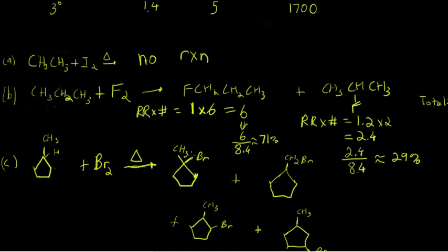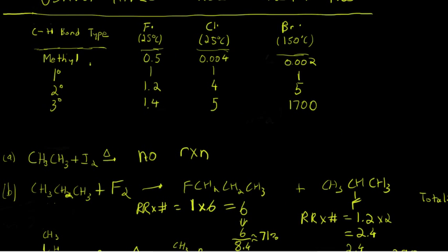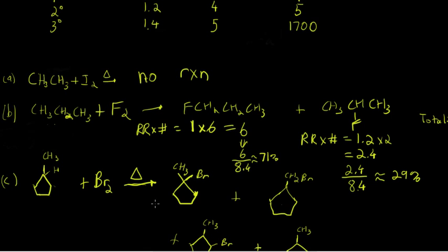So to give you this product, you only have one hydrogen that could be substituted. But it's a tertiary hydrogen participating in a tertiary CH bond. So with bromine, that has a relative reactivity of 1,700. So if you multiply the relative reactivity times the number of hydrogens, this would be 1,700 times 1, and that's 1,700.